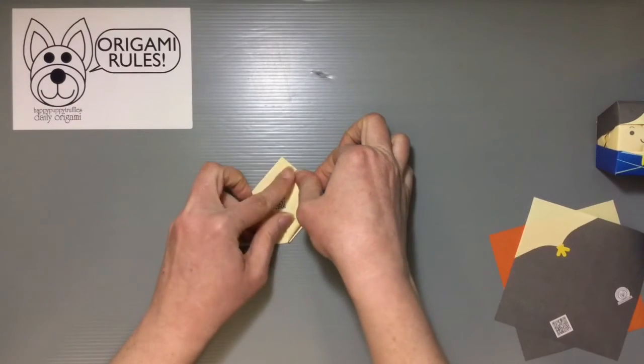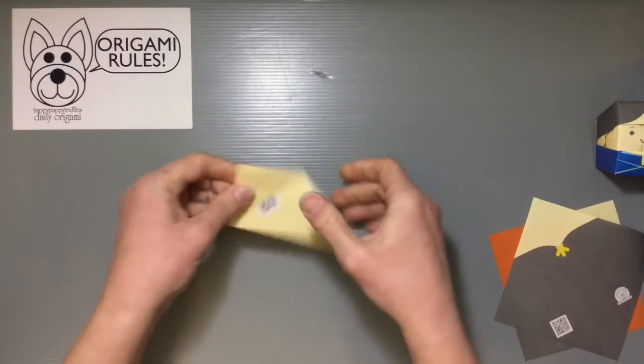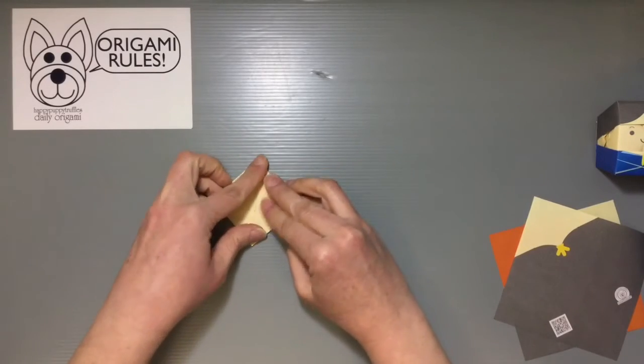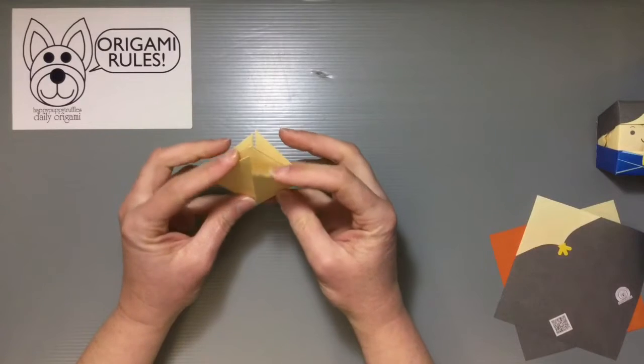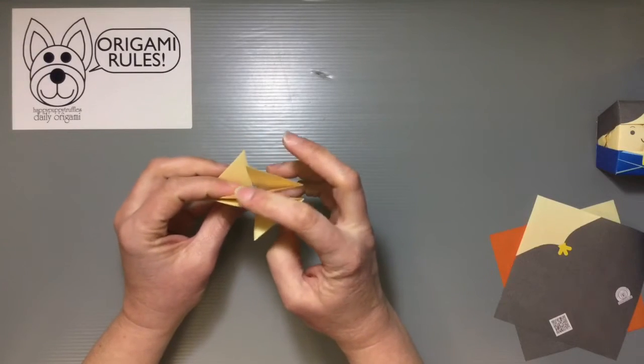Flip it over and do the same thing on the back. So you wind up doing this four times, getting each of these folded up to the top so that when you're done, you should have all four of these flaps coming up to this peak.